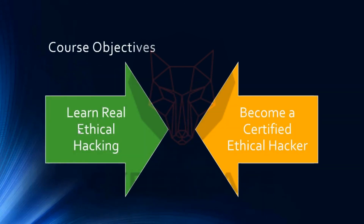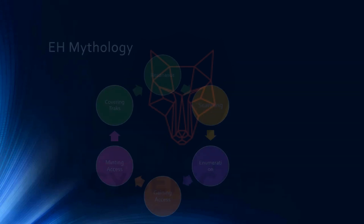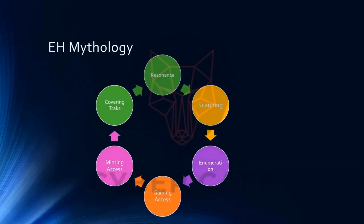My objective is not just to give you the ethical hacking skills needed to work as a penetration tester or ethical hacker in any organization, but also to prepare you to get certified — so you'll have both the skills and the license. We're going to follow EC-Council methodology, which has six phases: reconnaissance, scanning, enumeration, gaining access, maintaining access, and covering tracks.